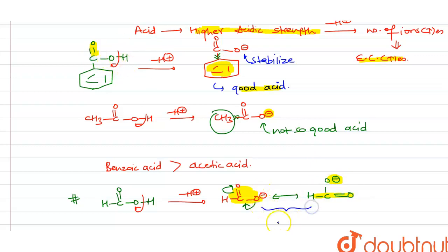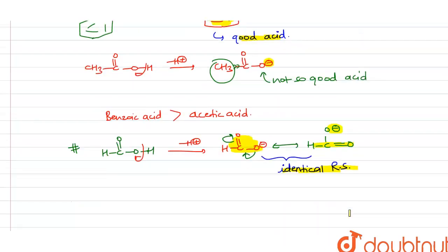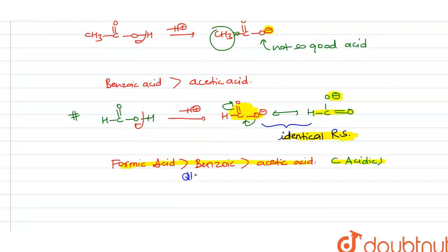there are two identical resonating structures present. Due to this, formic acid will be the most acidic among benzoic acid and acetic acid. This is an exception because of the identical resonating structures. The acidic strength order is: formic acid greater than benzoic acid greater than acetic acid. Therefore, formic acid will give the greatest number of ions.